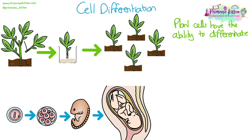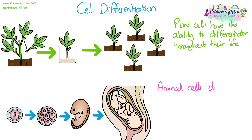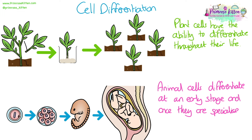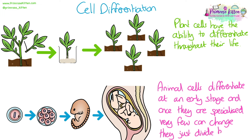Differentiation is different between plant and animal cells. Plant cells mostly have the ability to differentiate throughout their whole life, which is what makes cloning plants possible — you can cut off a piece of leaf or stem tissue and those cells can differentiate into root cells to create a new plant. Animal cells do not have this ability. Most animal cells differentiate at an early stage, and once specialised, very few can change or become stem cells again — they just divide by mitosis to replace themselves.